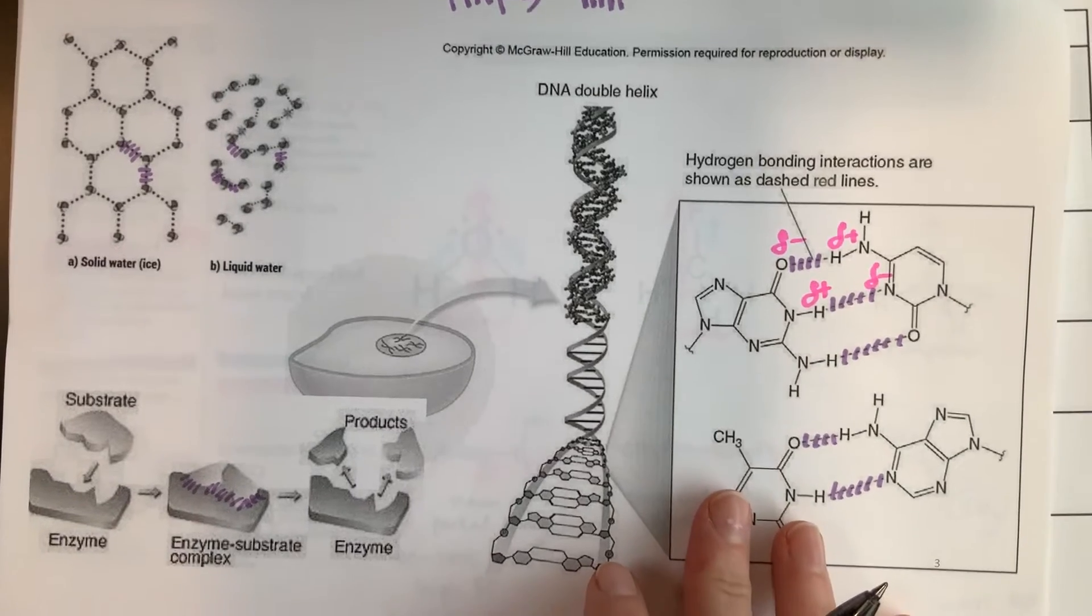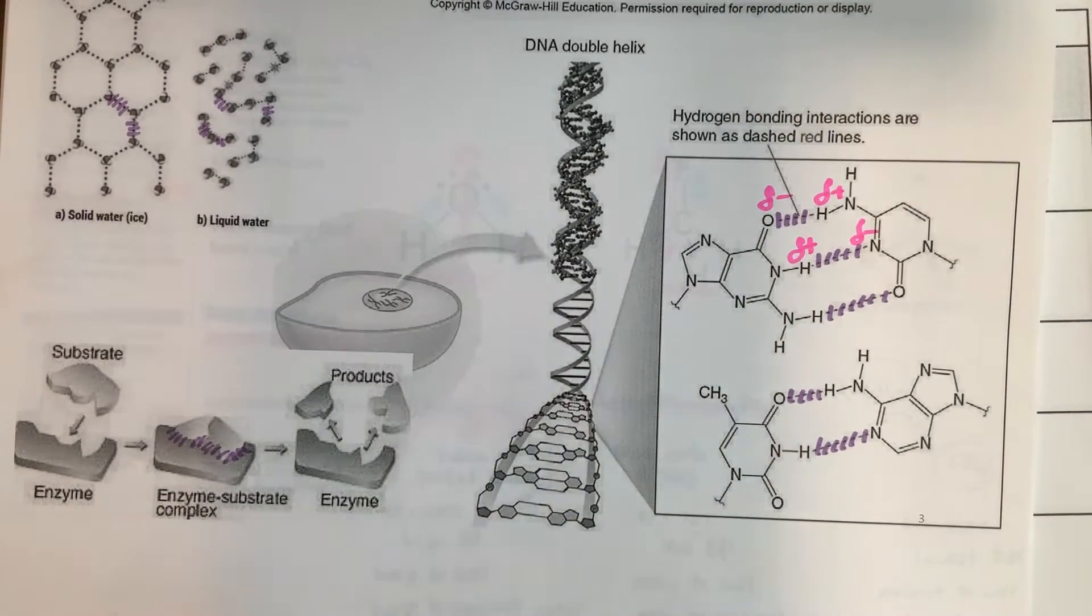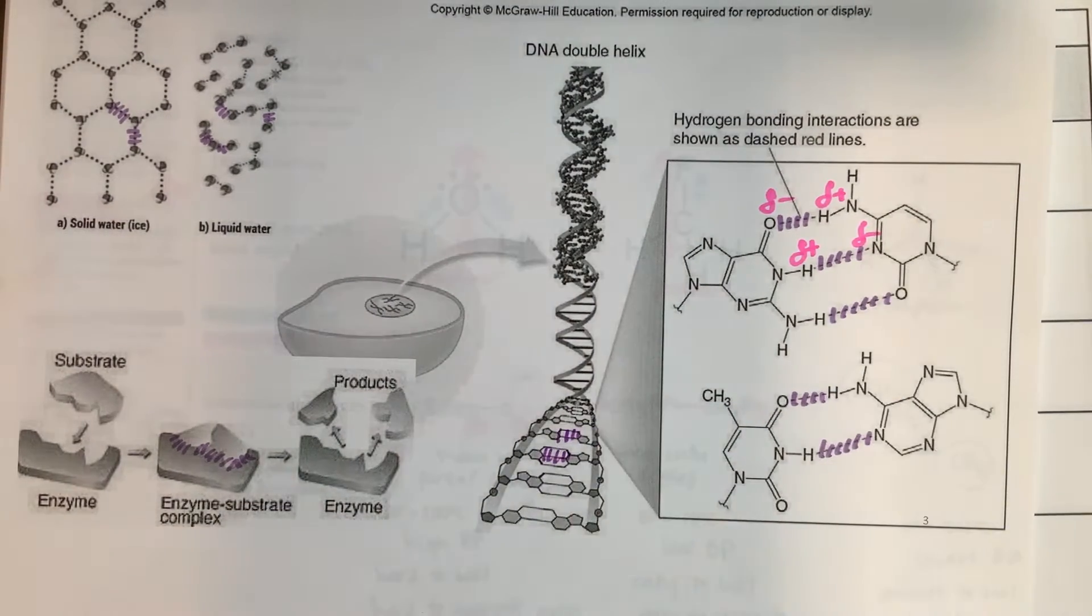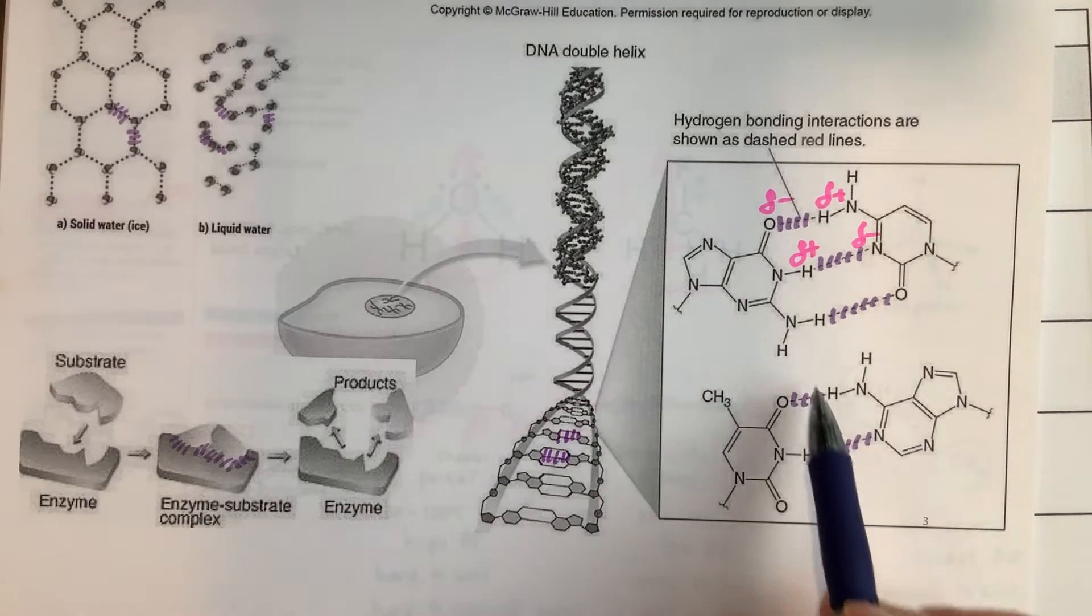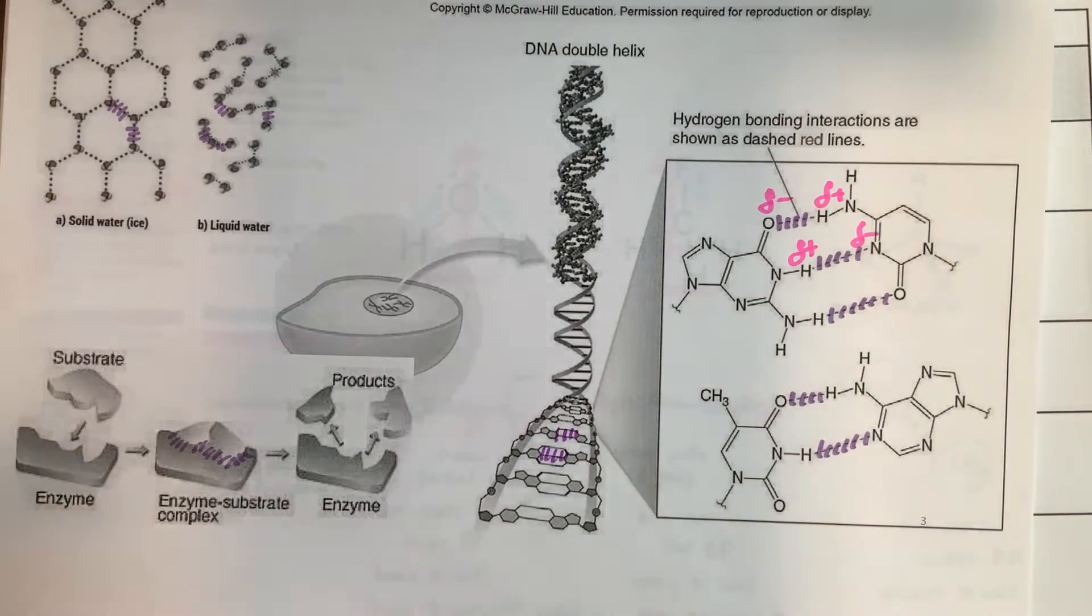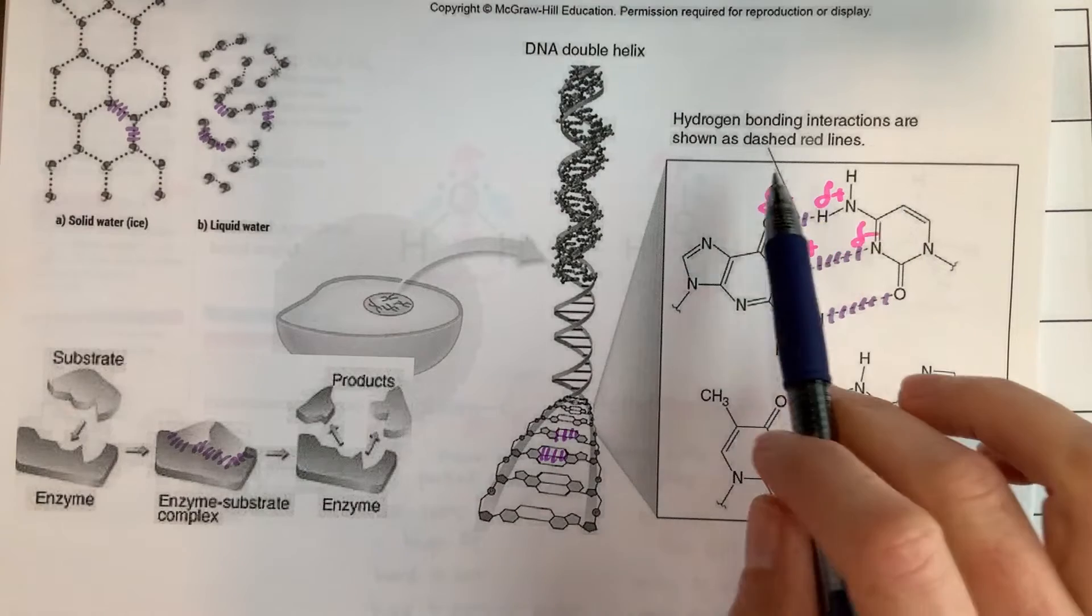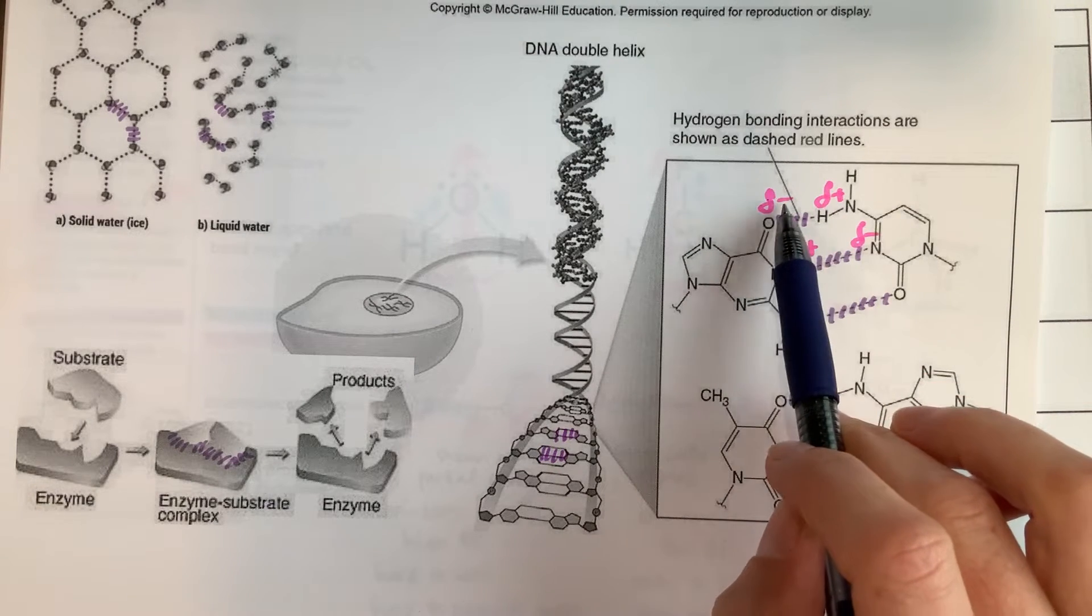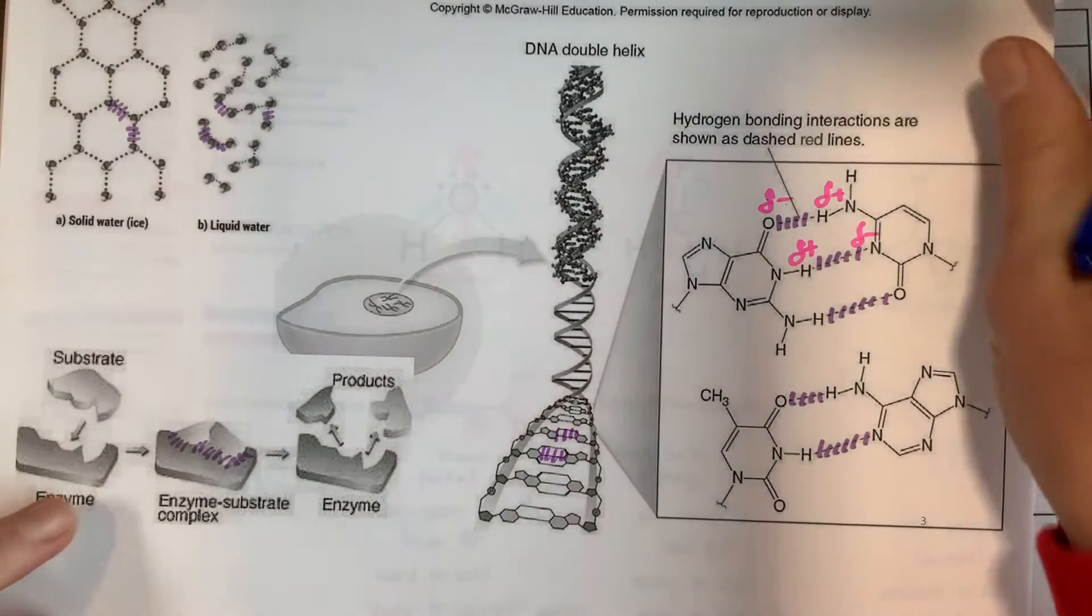Also when we look at DNA and we're looking at the attractions that are holding the base pairs together, those are intermolecular forces and we saw those zoomed in a little bit here. I'm also going to use a little bit of pink to emphasize where we have polar bonds and therefore partial negatives and partial positives.